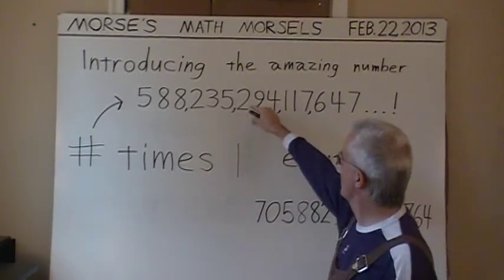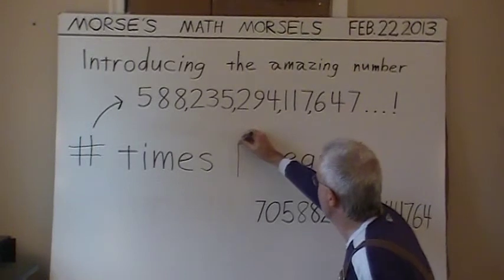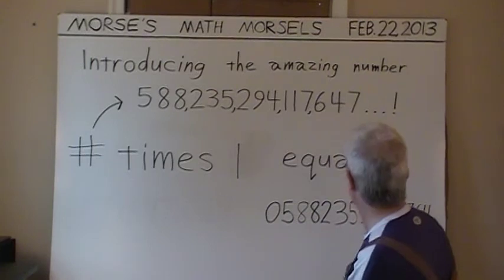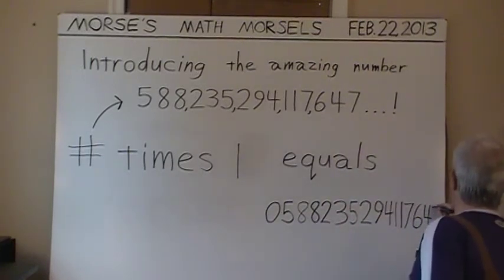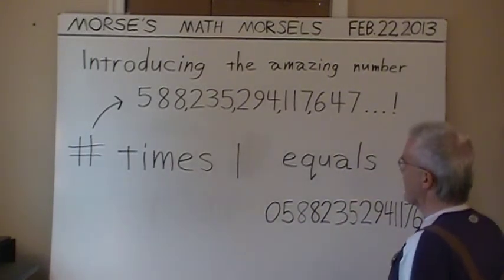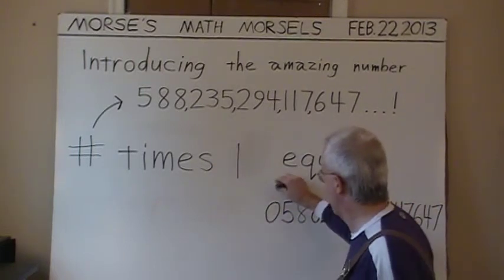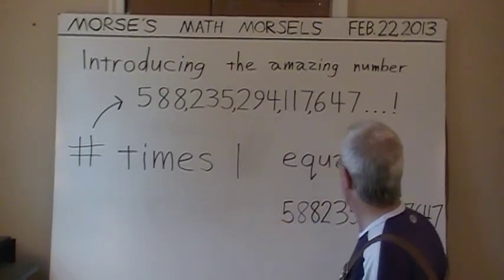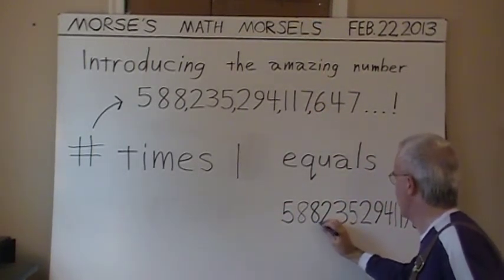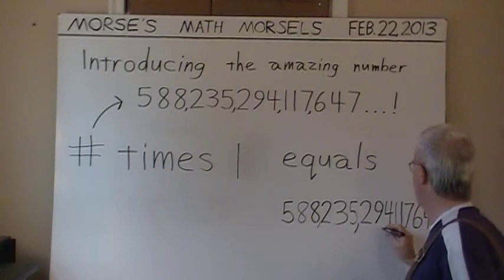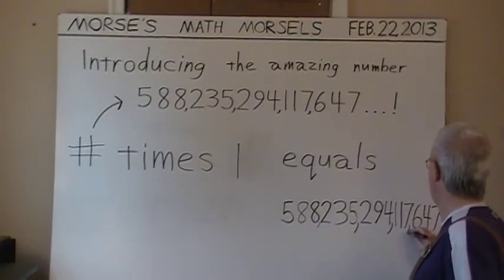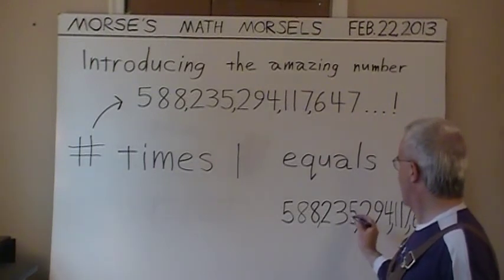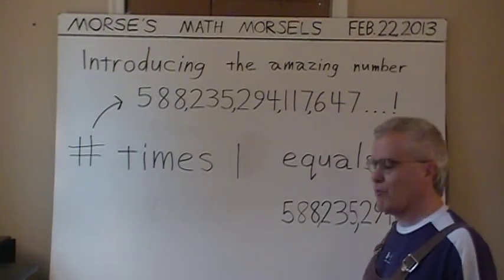We are back to our original number times 1. Rub this 7 out — last digit removal — and put it on the right. We no longer need that 0 in front; there are no digits to its left, so I'm just going to get rid of the 0. And we are back to our original: 588 trillion, 235 billion, 294 million, 117,647. Thanks for viewing.